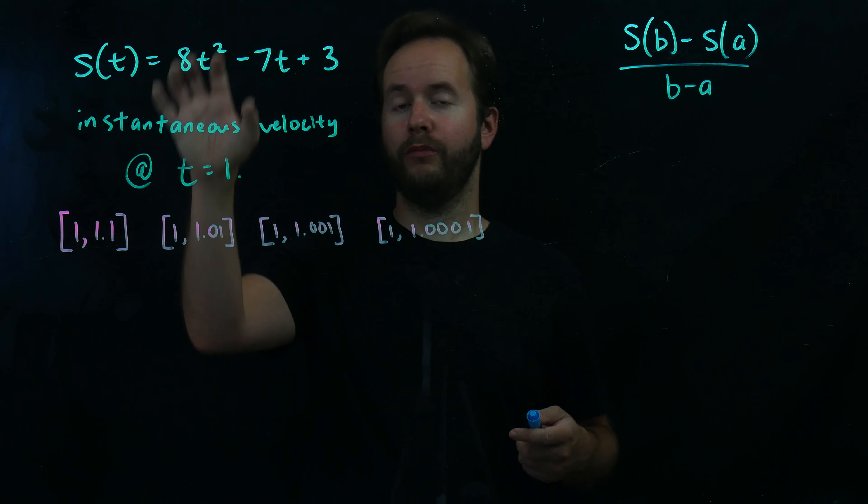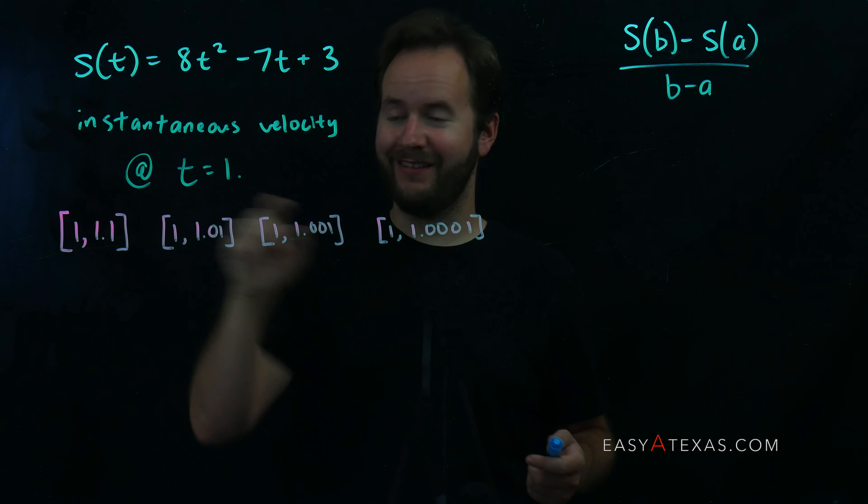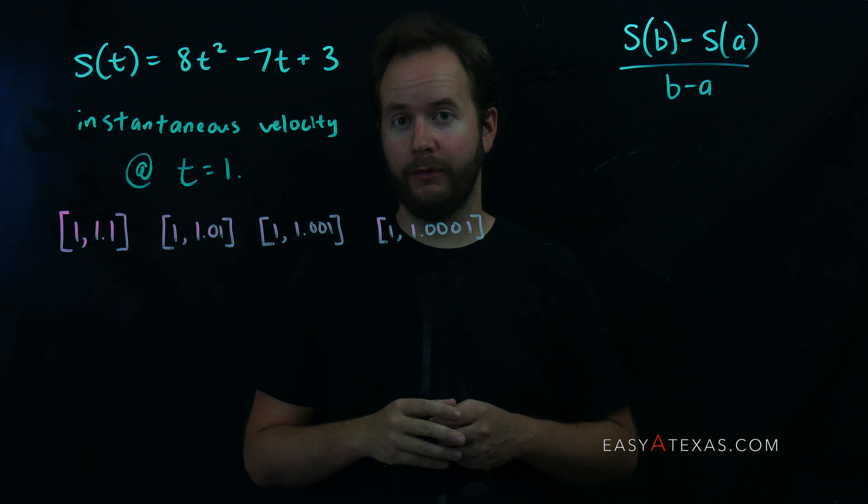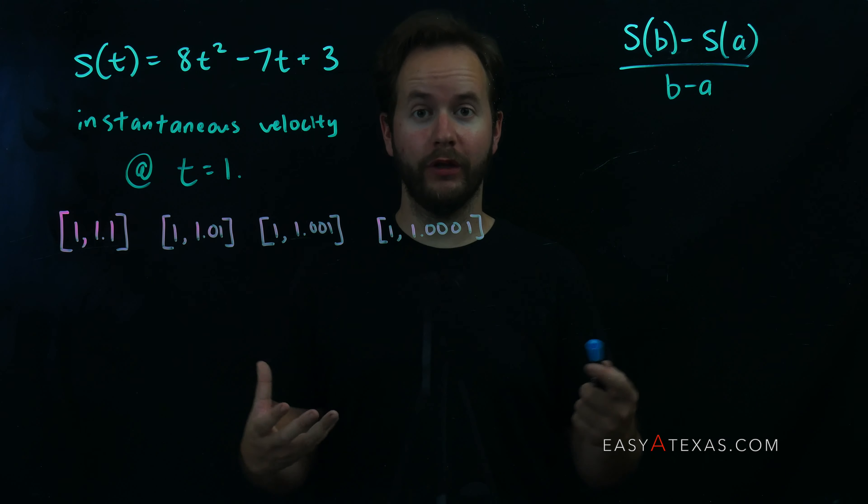Here, we want to determine the velocity of a particle moving according to this position function at t equals 1 by looking at successively smaller intervals when we compute the average velocity formula. That sounds like a mouthful. What is really going on here?